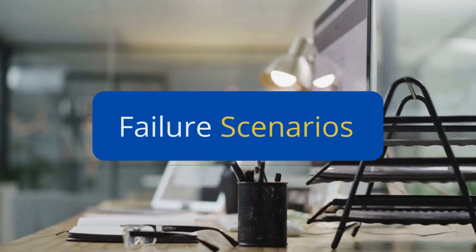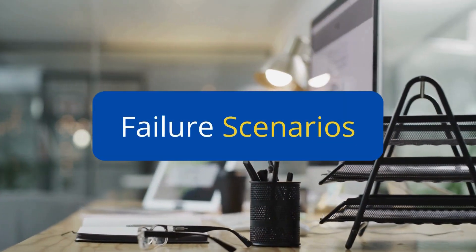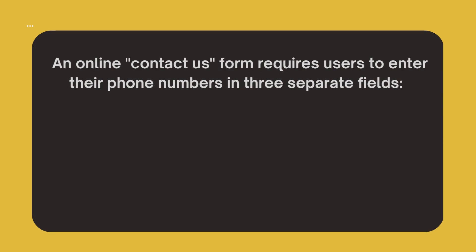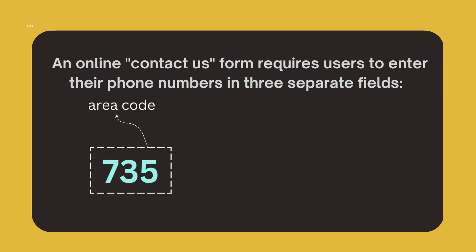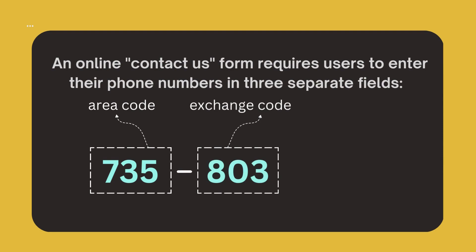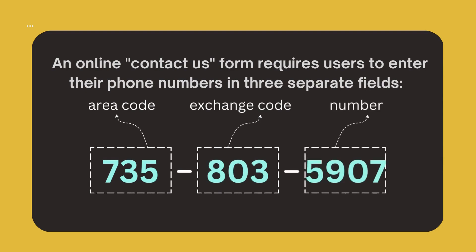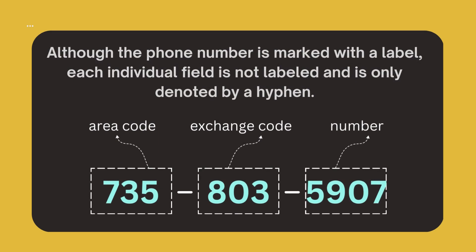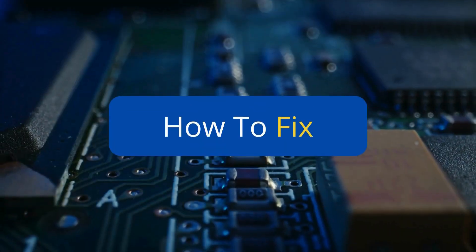This approach ensures that users can easily navigate and understand the available filtering options. Here's an example of a labelling failure scenario. An online contact us form requires users to enter their phone numbers in three separate fields: area code, exchange code, and number. Although the number is marked with a label, each individual field is not labelled and is only denoted by a hyphen.